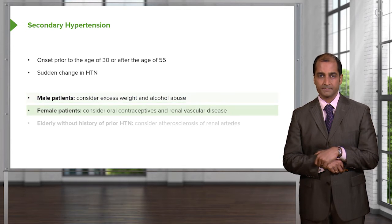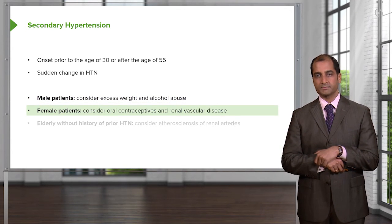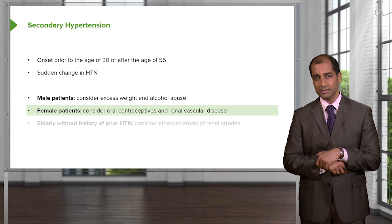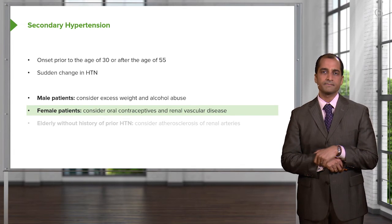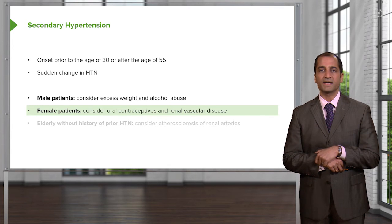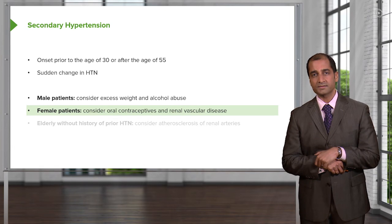For males, consider alcohol abuse. For females, what do you know about estrogen? It is prothrombotic. One of the risk factors for DVT — deep vein thrombosis — is estrogen. So if you develop a thrombus because of oral contraceptive pills that contain estrogen, that may result in secondary hypertension.